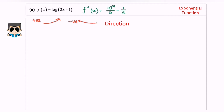In this case, the coefficient is positive, so our graph will start from the bottom, shifting up and moving to the right. That is the basic idea.